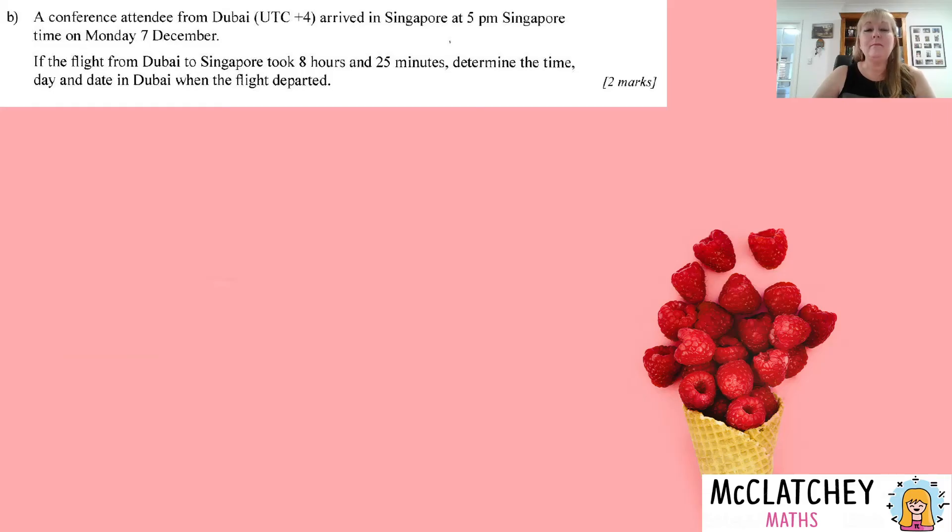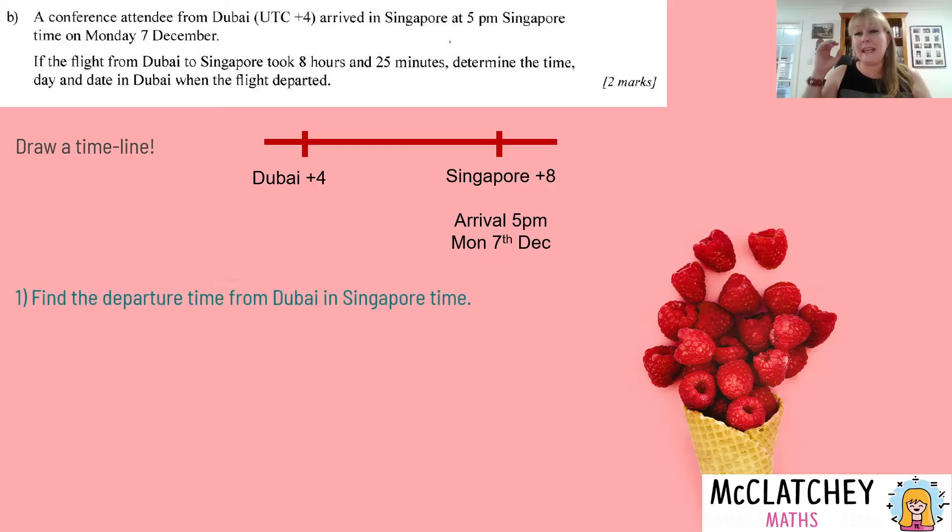Okay, let's look at part B. Someone else is coming to the same conference. They're coming from Dubai. And they arrived at 5 p.m. Singapore time on Monday the 7th of December. If the flight from Dubai to Singapore took 8 hours and 25 minutes, determine the time, day and date in Dubai when the flight departed. So once again, we're going to draw a little timeline just to get a bit of a mental picture of where everybody is in connection with one another. So Dubai is earlier than Singapore. Okay, and we know when they arrive, we've got to work backwards to see when they left. Okay, so we're going to find that Dubai. We're going to keep our watch again in Singapore this time, Singapore time and work backwards. We take the flight time off first and then we'll take the time difference off.